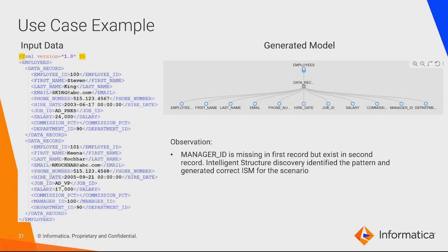Here's a use case example. I created a model by referring to this input XML dataset, which has two different employee IDs: 100 and 101. For employee ID 100, there is no manager ID specified in the sample data, but the manager ID is specified for the second record. The moment I feed this data to ISD, though the dataset is inconsistent in nature, ISD creates the model correctly — you can see the generated model will have the manager ID as a node. So even when input data is inconsistent, ISD parses the dataset efficiently and generates the most suitable structure.